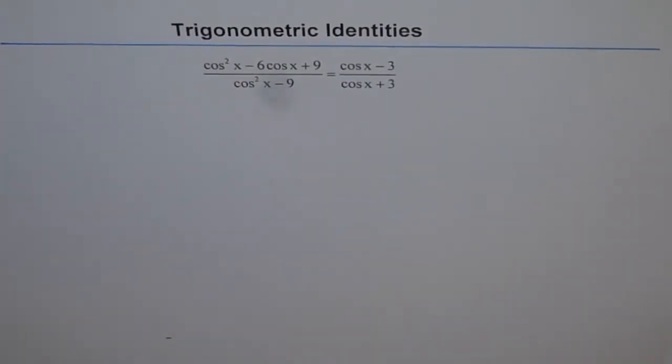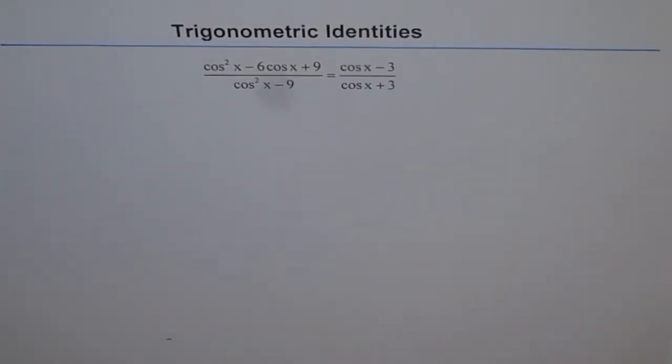Trigonometric identities: cos square x minus 6 cos x plus 9 divided by cos square x minus 9 equals cos x minus 3 divided by cos x plus 3.